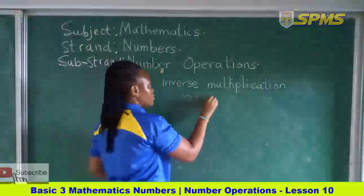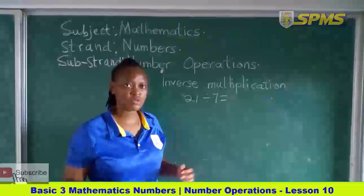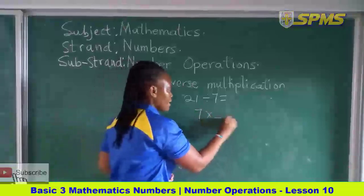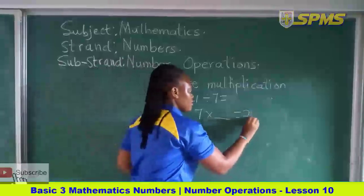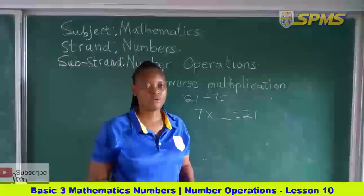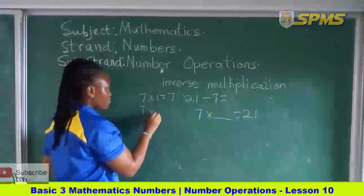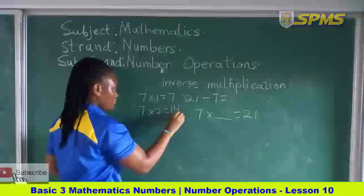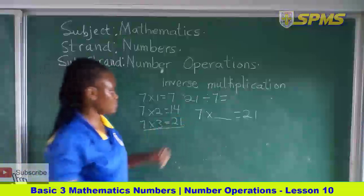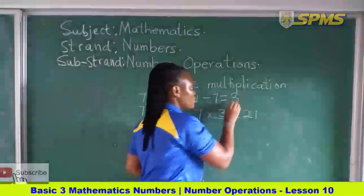Let us solve 21 divided by 7. We are still using the inverse multiplication. We take the second number, which is 7, and multiply it by an unknown number to get the first number, 21. So we take our times table: 7×1=7, 7×2=14, 7×3=21. So 7 times 3 gives us 21. Therefore, 21 divided by 7 equals 3.